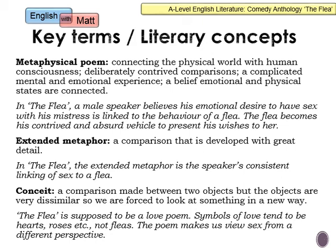For us today — which is relevant for AO5 — we don't see fleas the same way audiences did when the poem was written. Fleas were often seen as a symbol of love at the time, and this is supposed to be a love poem. But as our attitudes have changed, we now associate fleas with disease, plague, and filth, so we react to the flea as an image quite differently now.